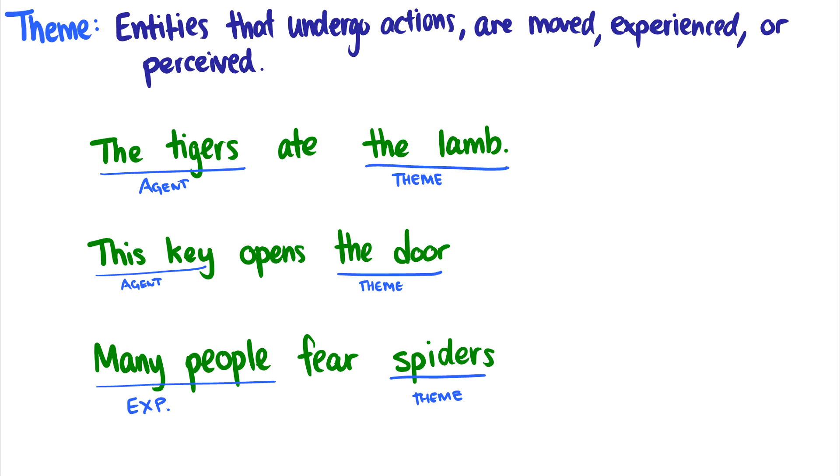But we can see in these transitive verbs, the tigers ate the lamb, this key opens the door, many people fear spiders, it's always the object that is the theme. Okay, this is one of those trends that can help you learn which ones are themes. Typically objects.